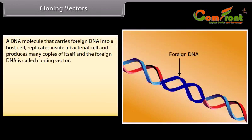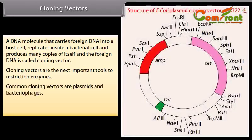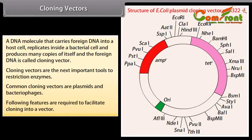Cloning vectors. A DNA molecule that carries foreign DNA into a host cell, replicates inside a bacterial cell, and produces many copies of itself and the foreign DNA is called a cloning vector. Cloning vectors are the next important tools after restriction enzymes. Common cloning vectors are plasmids and bacteriophages. The following features are required to facilitate cloning into a vector.